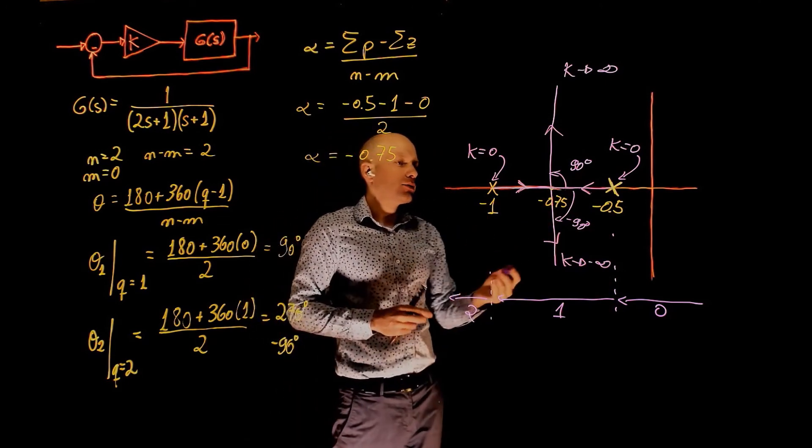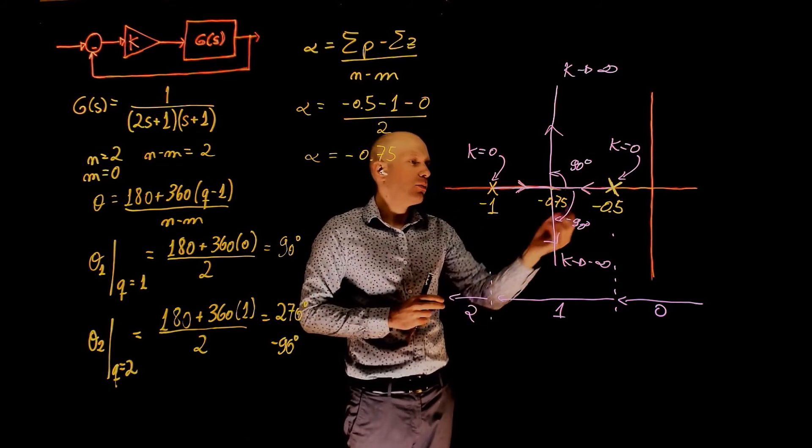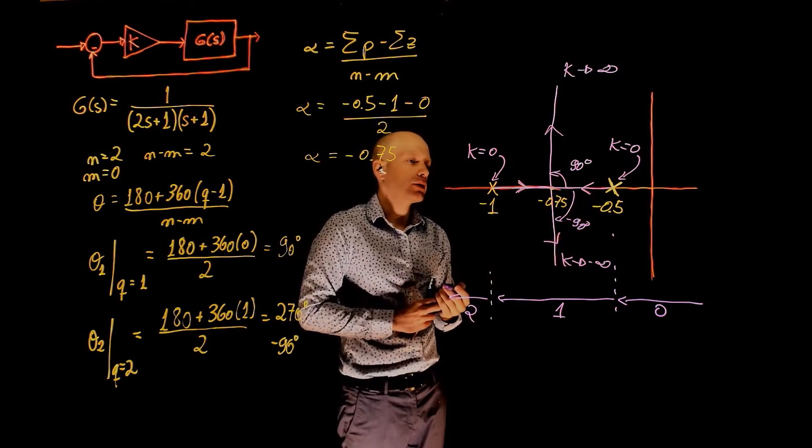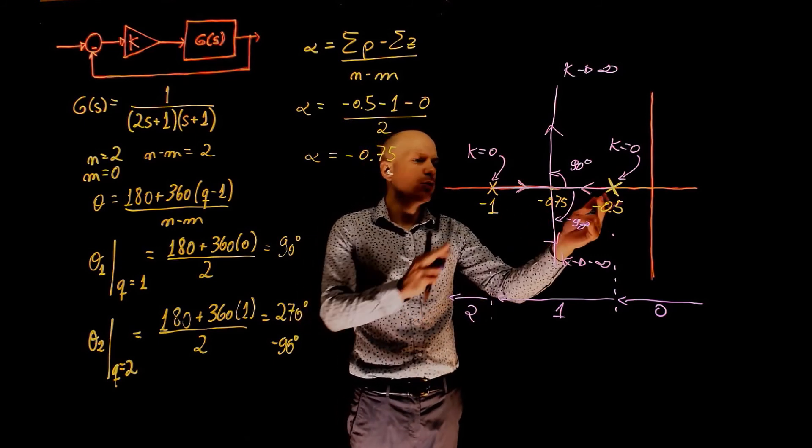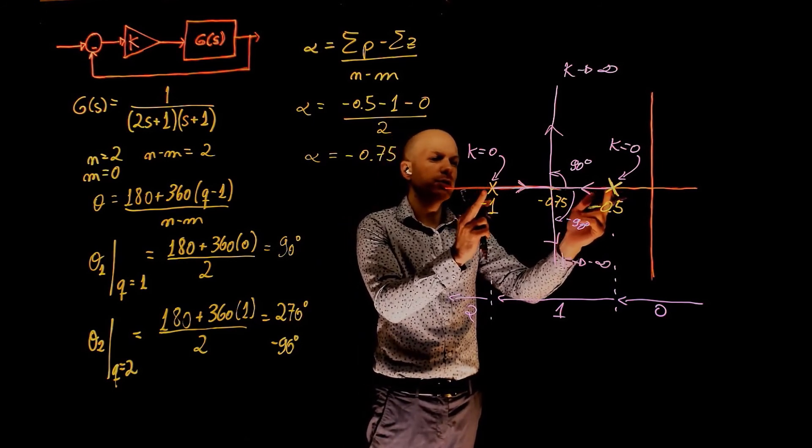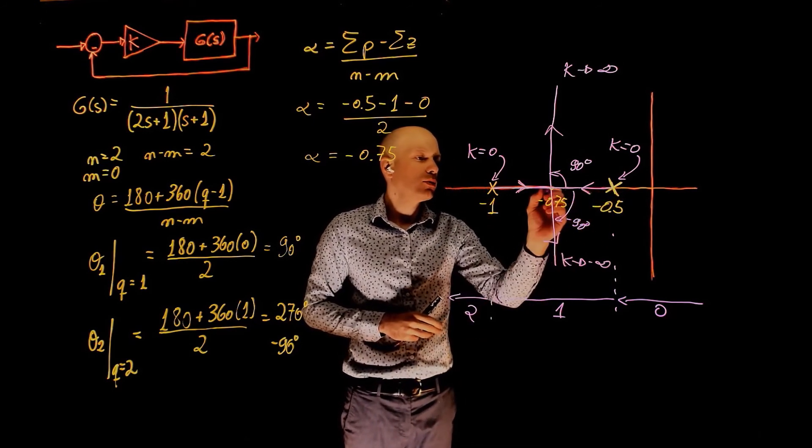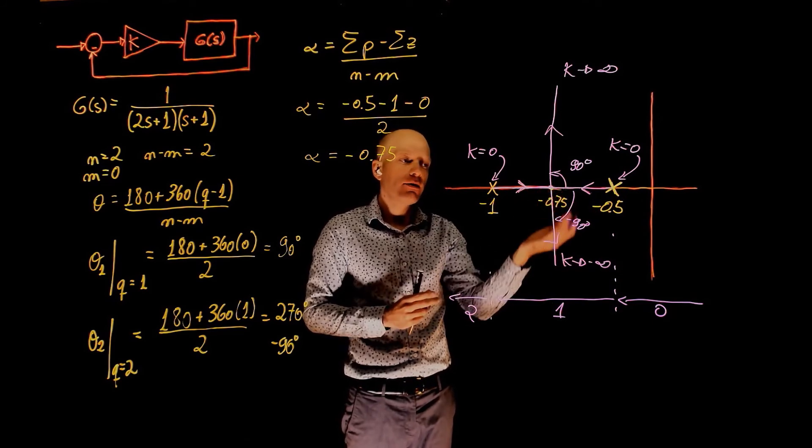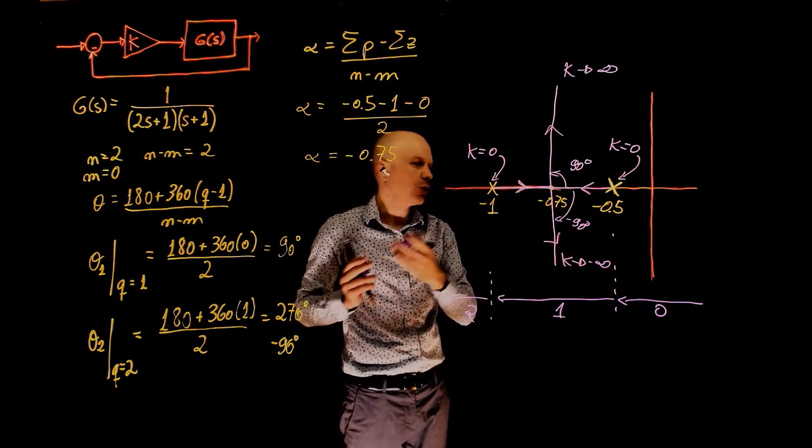So what can you conclude from this analysis? From the other two that we did, the poles would remain on the real axis. This one is different. The poles are initially real numbers, so the system is over-damped.